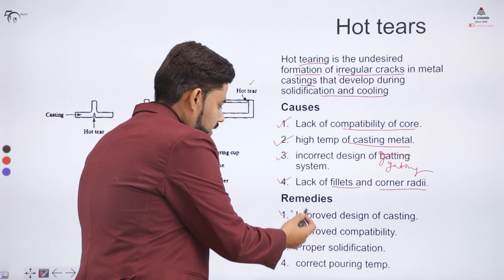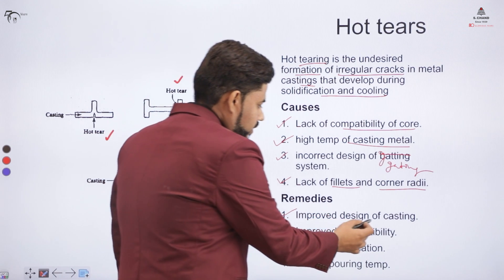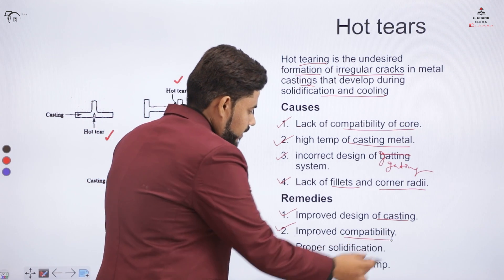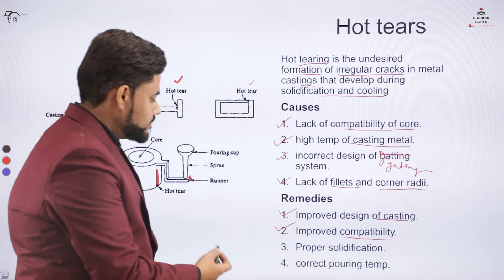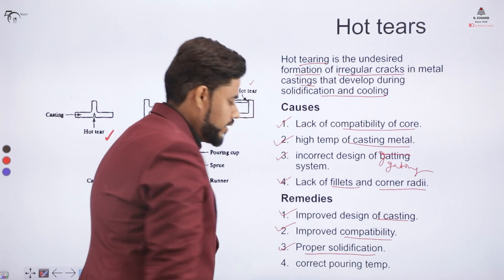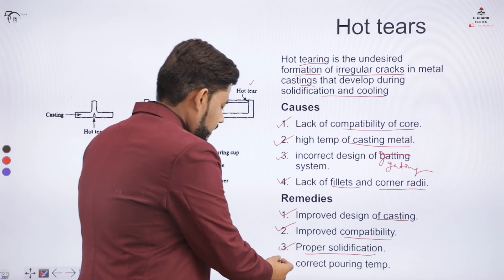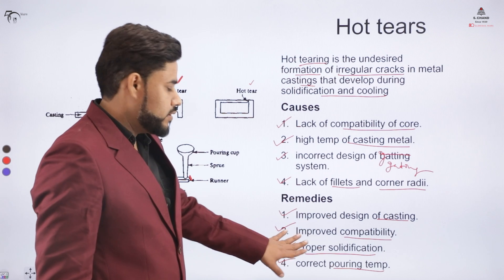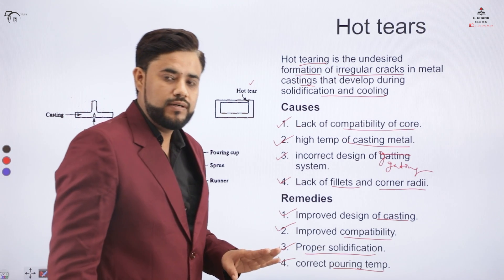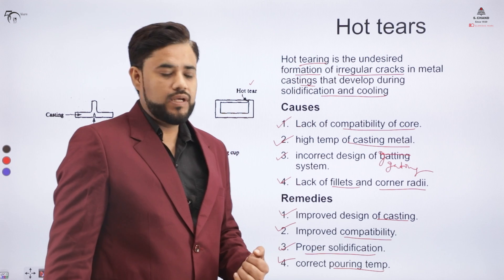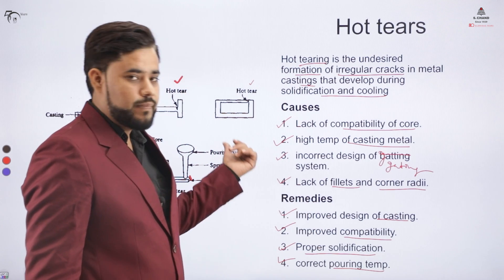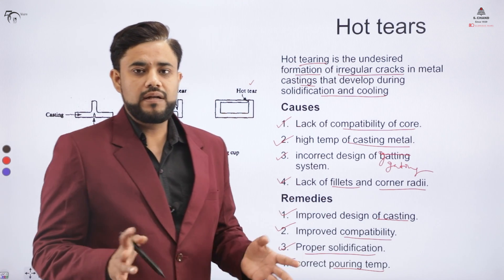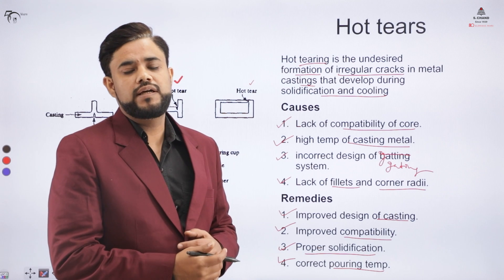Remedies for hot tears: improve the design of the casting, improve compatibility with the core, and ensure proper solidification. Calculate the solidification time and correct the pouring temperature prior to pouring the material. Also check for core compatibility and improve the design of the final cast product or the gating system.